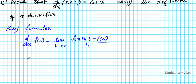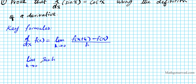There are also two limit formulas you need to know for these proofs. The first one is the limit as h approaches zero of sine h over h, which equals 1 — this is the sandwich theorem result. Another formula you need to know is the limit as h approaches zero of (cosine h minus 1) over h, which equals zero.